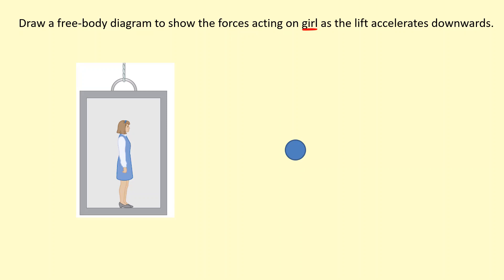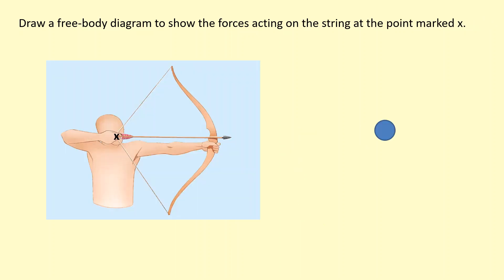In this free body diagram we draw the forces on the girl as the lift accelerates downwards. Because the girl is accelerating along with the lift, the weight must be larger than the upward normal reaction force. So there is a resultant force acting downwards, which is why she accelerates downwards — but not at 9.81 m/s², it'll be a bit smaller than that. She would also feel like she weighs less than normal; her weight hasn't changed, but because the normal reaction force is smaller than usual, it would feel like she weighs less.